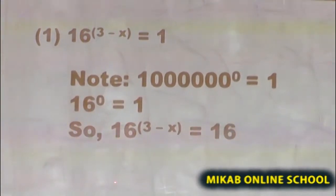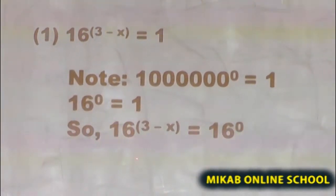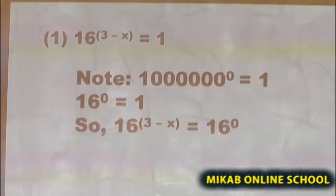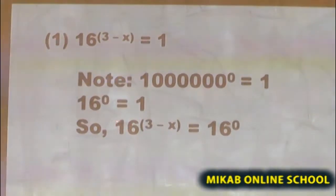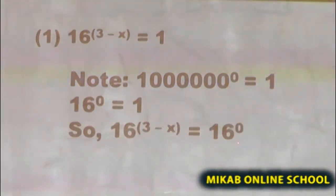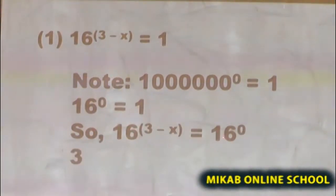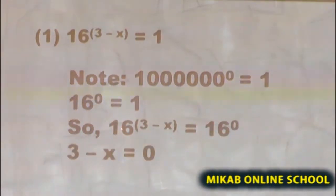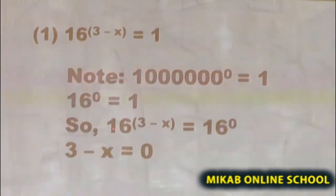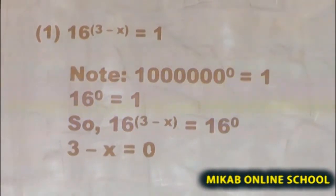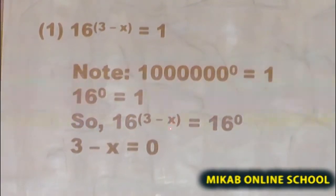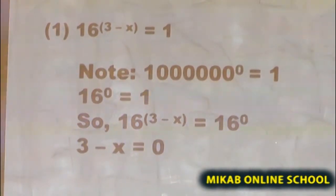You agree with me that 16 on the left equals 16 on the right. Therefore, the bases cancel each other out. Since the bases are equal, the exponents must be equal, giving us 3 minus x equals 0.